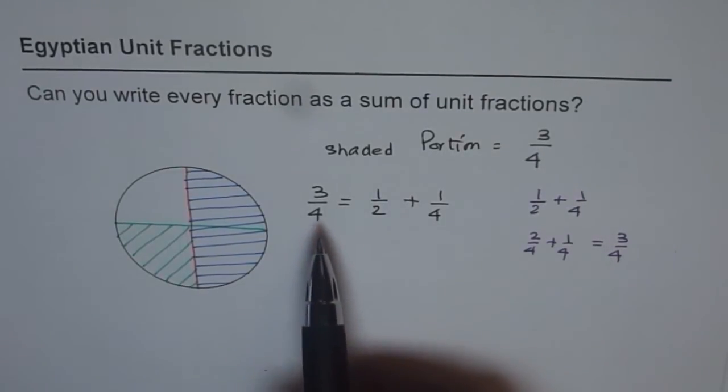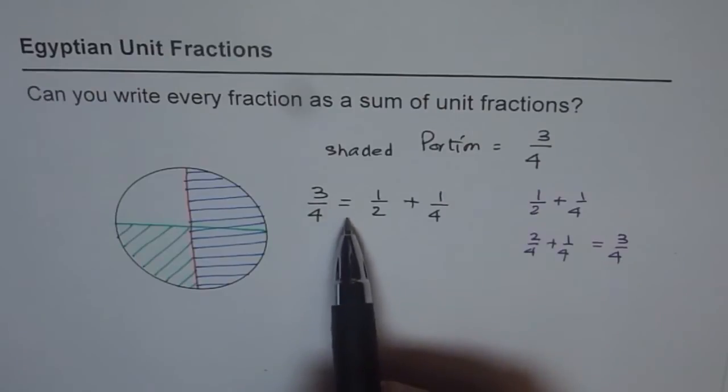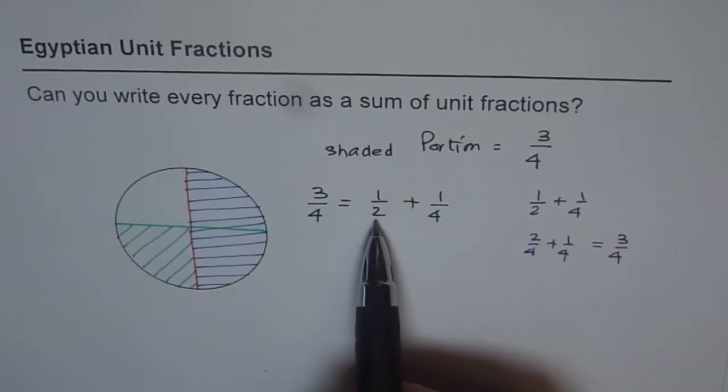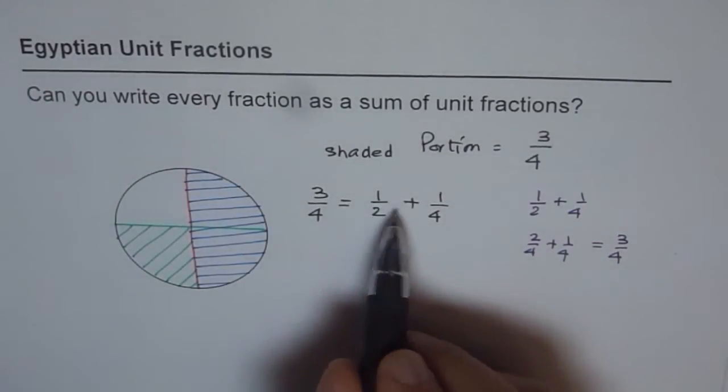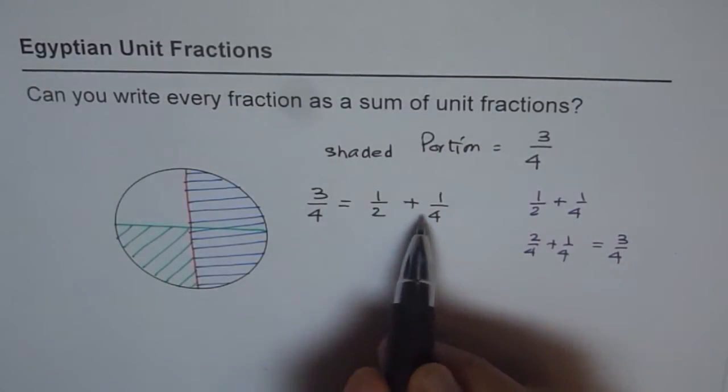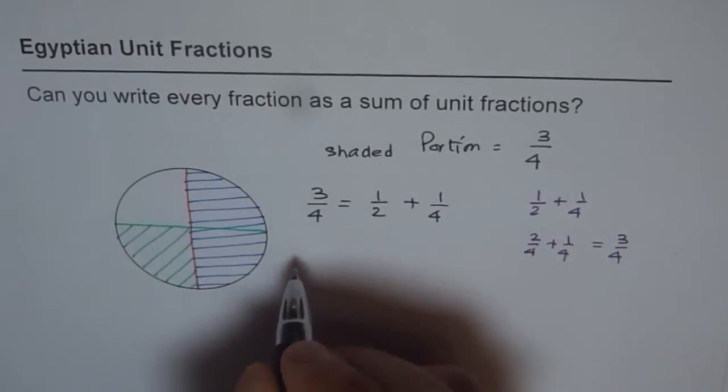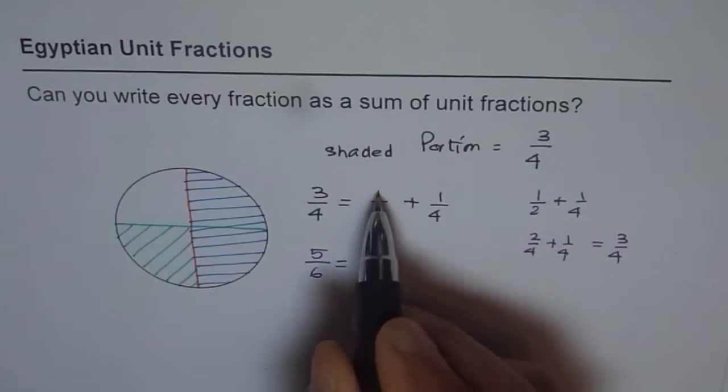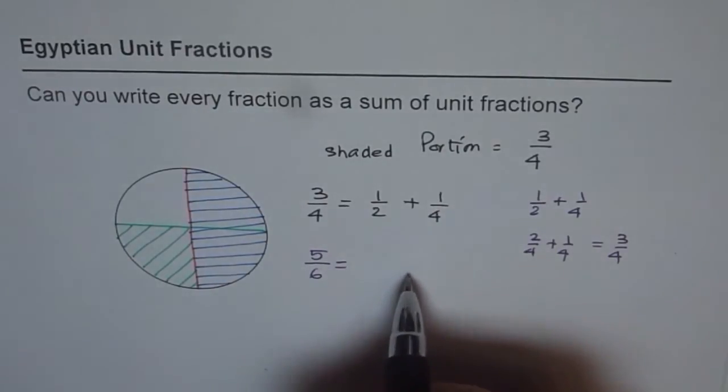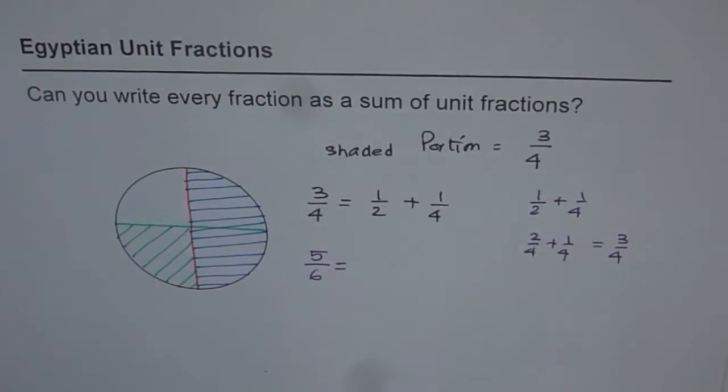But what you observe here is three-fourths can be written as combination of one-over-two plus one-over-four. Now the question here is that can you write all fractions like combination of such numbers? These are called unit fractions. For example, can you write five-over-six as combination of one-over-something plus one-over-something else? Is that possible or not?